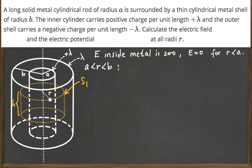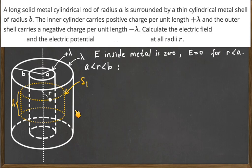For r between a and b, we pick a point at distance r from the central axis of the cylinders, and we choose an imaginary Gaussian surface. Because of the cylindrical symmetry of the problem, this Gaussian surface will be a cylinder. Let's take it as having height h, and of course radius r, since r is the distance from the point to the central axis.